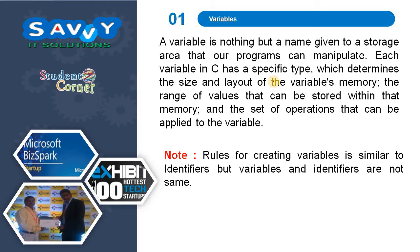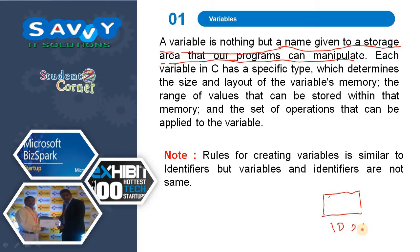A variable is nothing but a name given to a storage area that our programs can manipulate. Let us assume this is the memory location. When I am defining int a, automatically the memory location is assigned to a. And when a is equal to 20, the value is stored there.